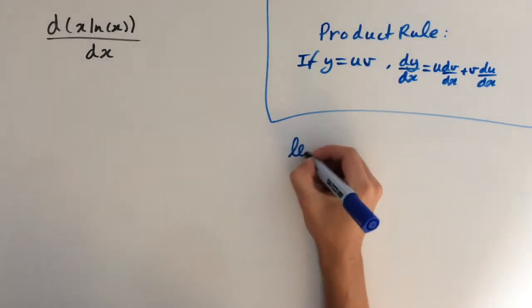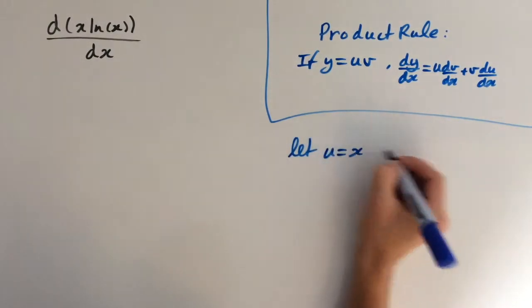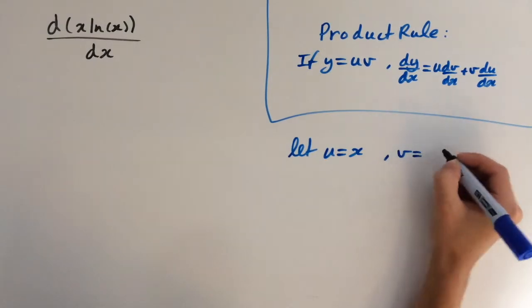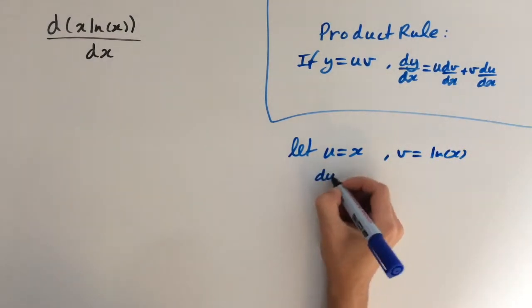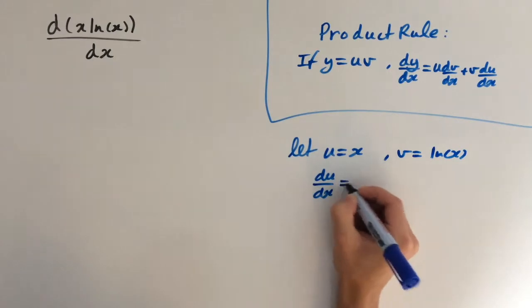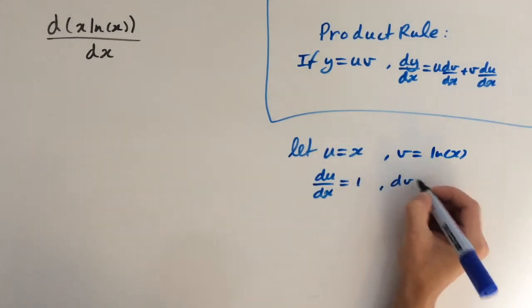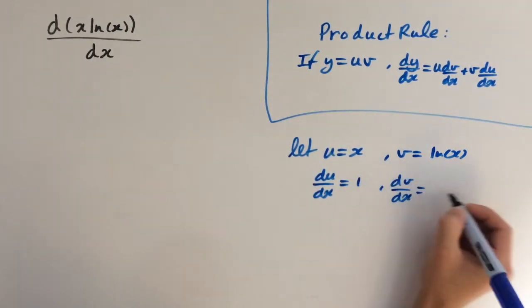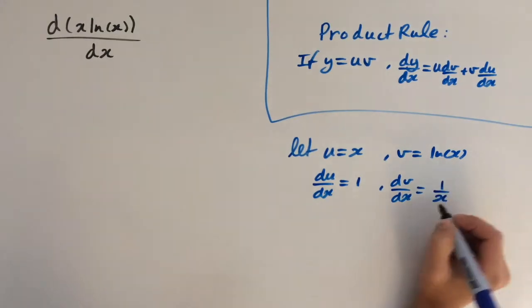So we're going to let u equal x and v equal ln of x. So du dx equals 1 and dv dx equals 1 over x.